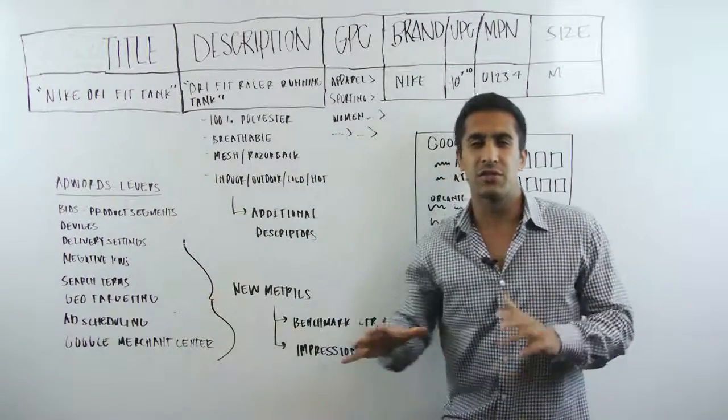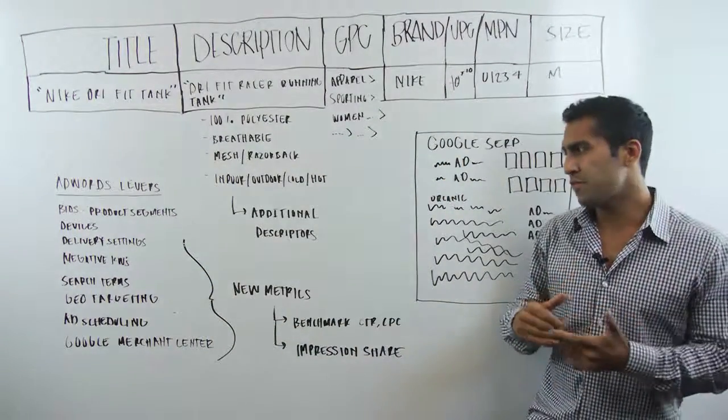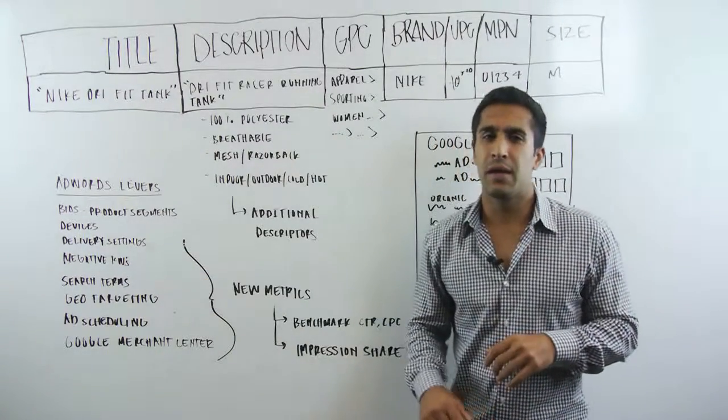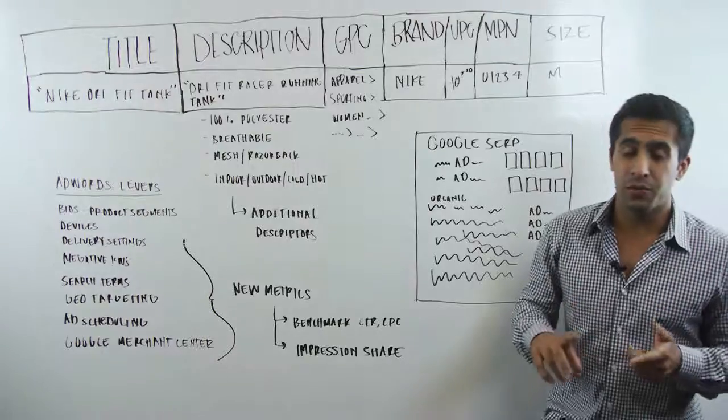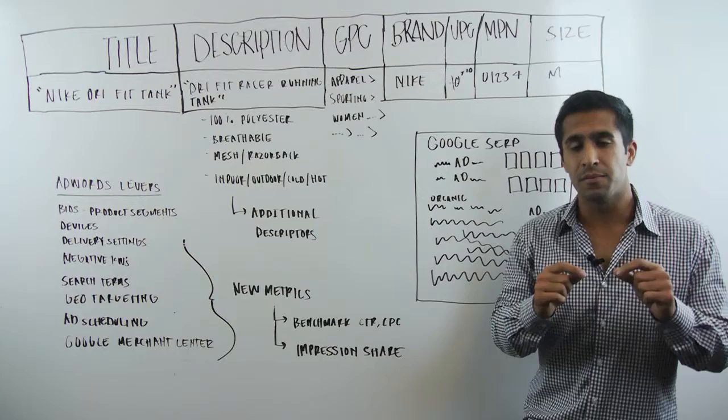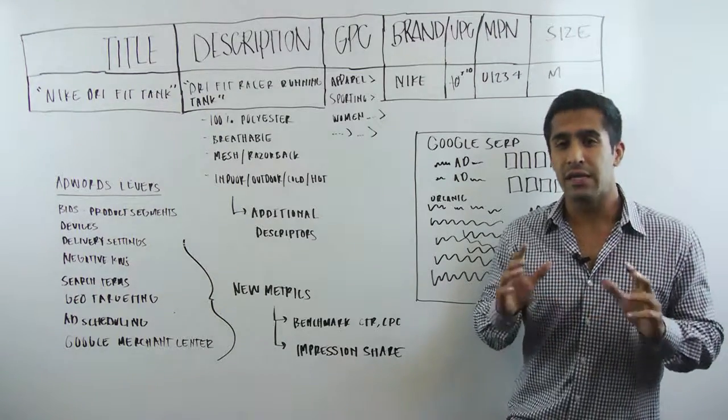Then we've got negative keywords. That's more of a sculptor. That's going to limit some of your actual traffic. We've got search terms. This is a good one. Like I mentioned earlier, we are bidding on products. But that doesn't mean Google doesn't give you the actual search term that a user is entering into the search query bar to trigger your ad.